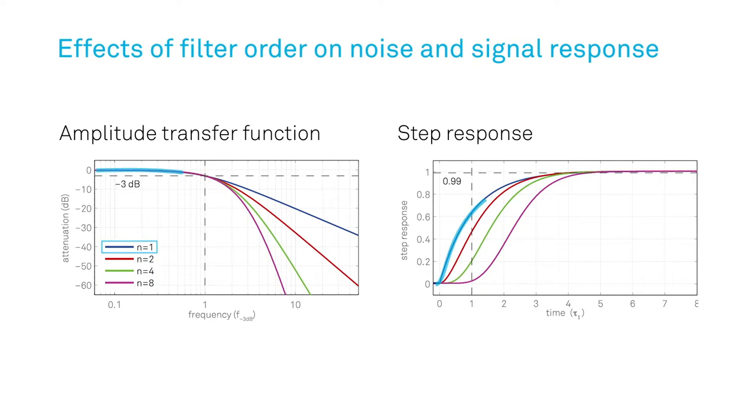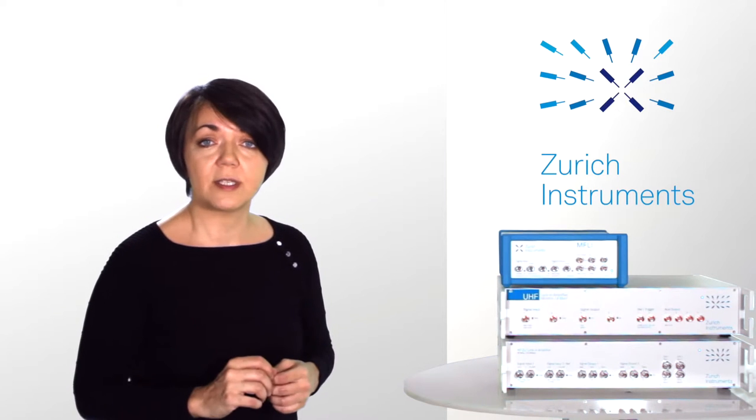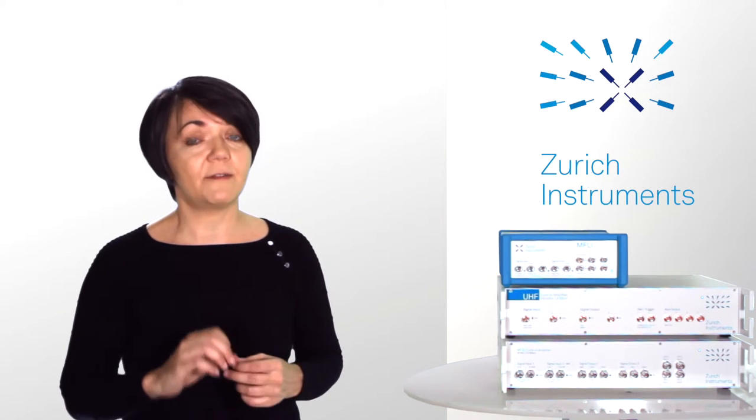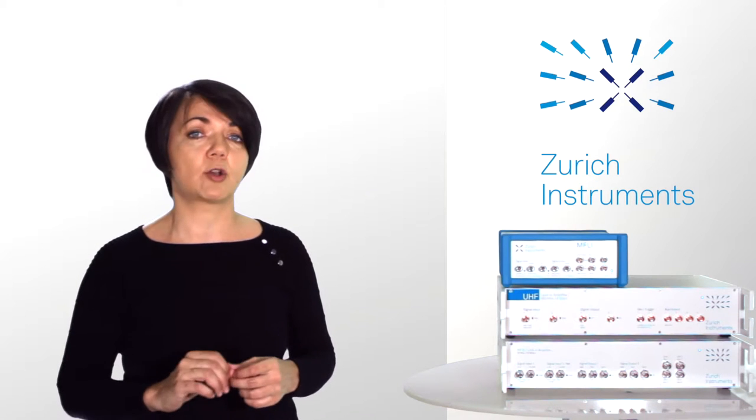A lower order filter has the advantage of causing less phase or temporal delay, which helps whenever highest speed requirements need to be met. The entire principle of mixing and low-pass filtering is called a phase-sensitive detection, or demodulation.